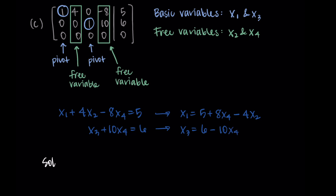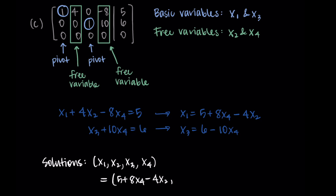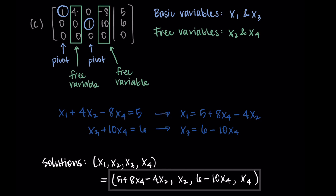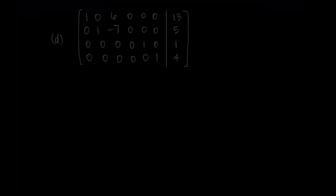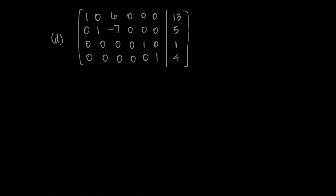Solving for the basic variables in terms of the free variables: x1 equals 5 plus 8x4 minus 4x2, and x3 equals 6 minus 10x4. The solution is of the form (x1, x2, x3, x4), where I replace x1 and x3 with those expressions while x2 and x4 remain free. This solution has two free variables and is written in terms of both.